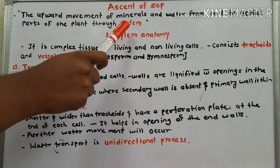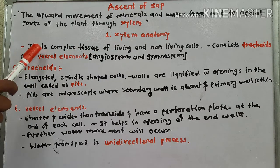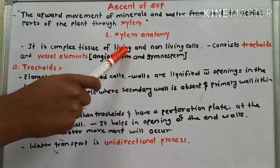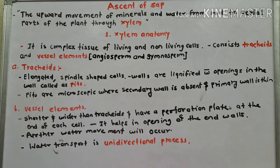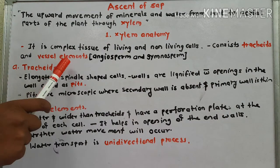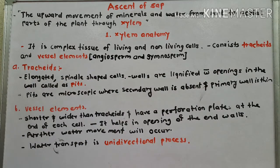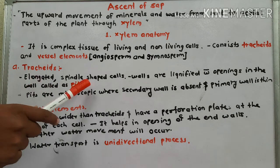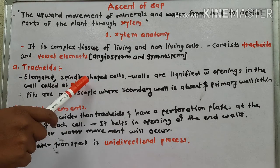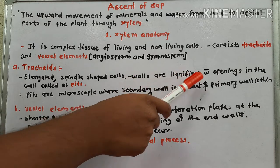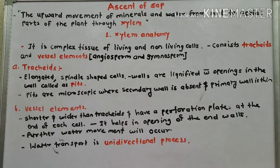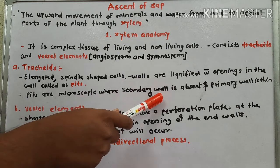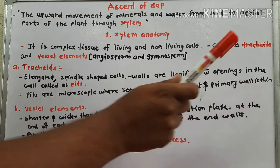Xylem is responsible for Ascent of Sap. Xylem anatomy: it is a complex tissue of living and non-living components. It consists of tracheids and vessel elements. Tracheids are elongated spindle-shaped cells. The tracheid walls are lignified with openings in the wall called pits. The secondary wall is absent and the primary wall is present but very thin.